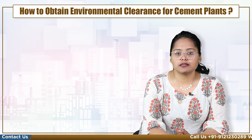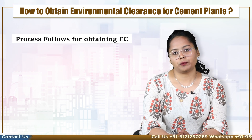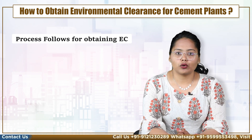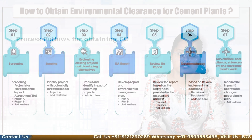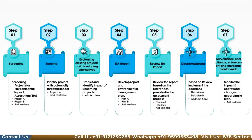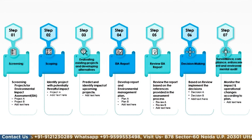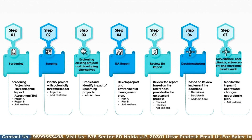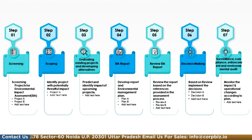Now let's understand the process followed for obtaining EC. The 1st stage is screening. The 2nd stage is scoping. The 3rd stage is public consultation, including the process of conducting a public hearing. The last and final stage is appraisal or clearance.